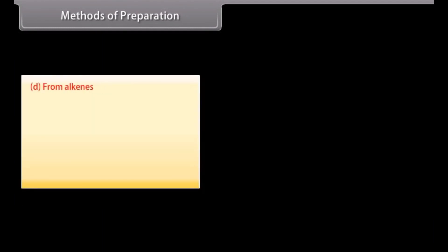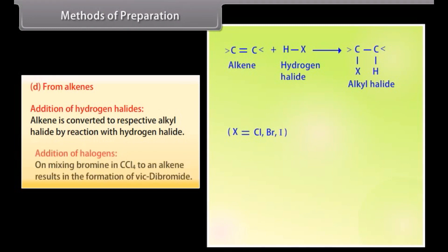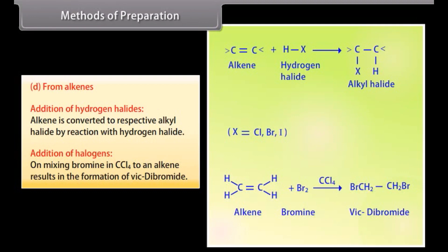From alkenes: Addition of hydrogen halides — an alkene is converted to an alkyl halide by a reaction with a hydrogen halide. Addition of halogens — on mixing bromine in CCl4 with an alkene, it results in the formation of a vic-dibromide.